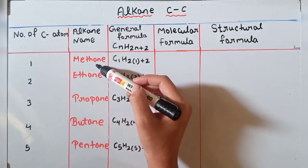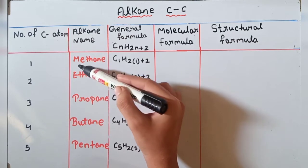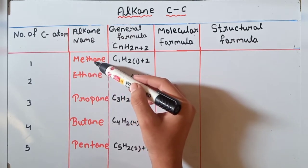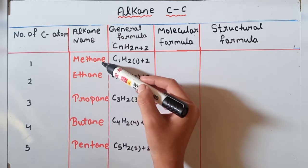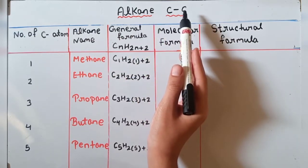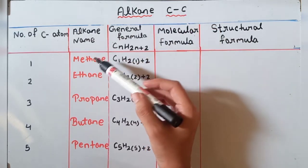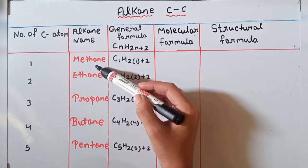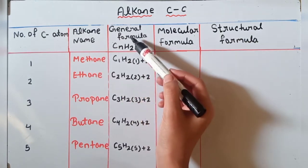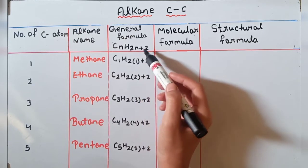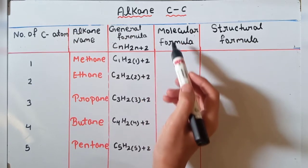Alkane name will be methane. Yahan par root word 'meth' rehta hai, aur yahan par hum suffix lagate hain '-ane'. '-ane' ka matlab kya hota hai — carbon to carbon single bond, okay, that it is an alkane. That is methane.